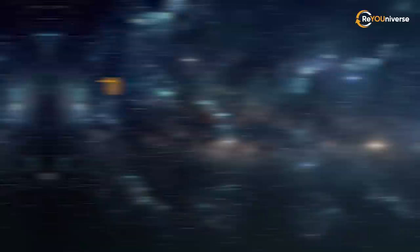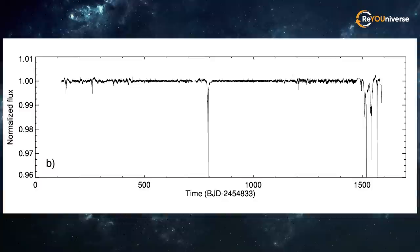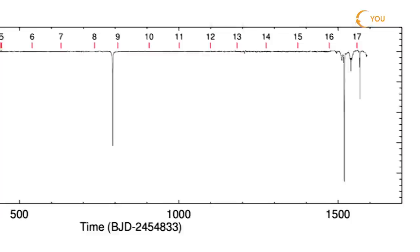As I said, multiple dips in the light curve occurred, lasting for 100 days. Moreover, they all had irregular and unpredictable manner.